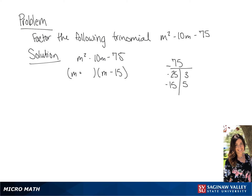So we will put 5 in the first one and 15 in the second. So we have m plus 5 multiplied by m minus 15 as our solution.